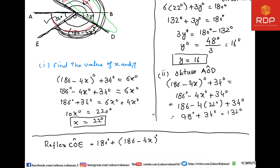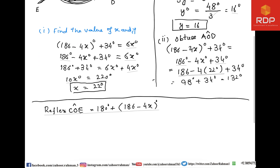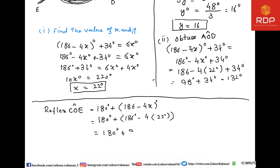Inserting x = 22: 180° + (186 − 4×22)° = 180° + 98° = 278°. A reflex angle is greater than 180° and less than 360°, and you can see from the answer that 278° is between 180° and 360°.